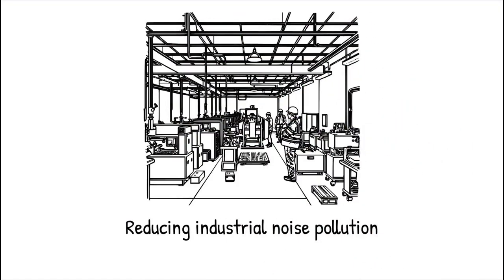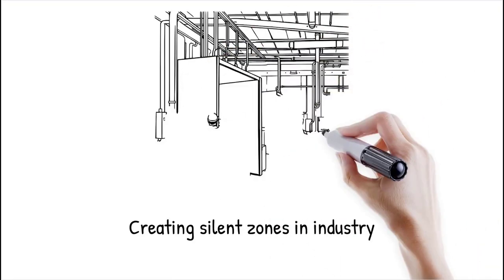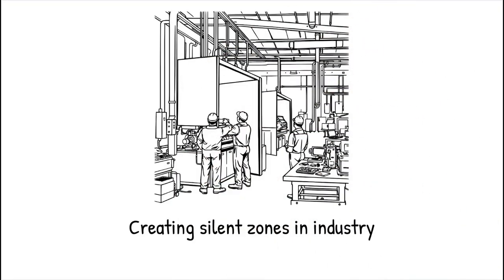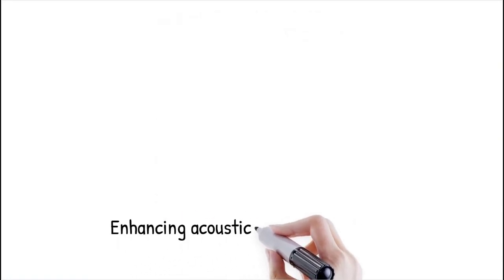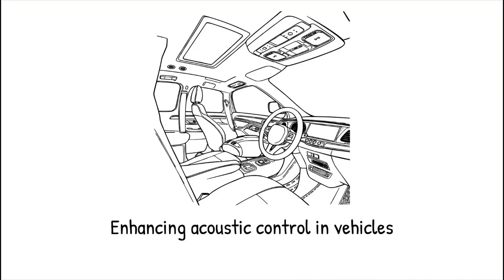Factories and industrial sites often deal with high levels of machine-generated noise, which can cause hearing damage and reduce worker productivity. Acoustic cloaking materials could be applied to machinery and equipment to create localized zones of silence, reducing harmful noise pollution while maintaining ventilation and structural integrity.